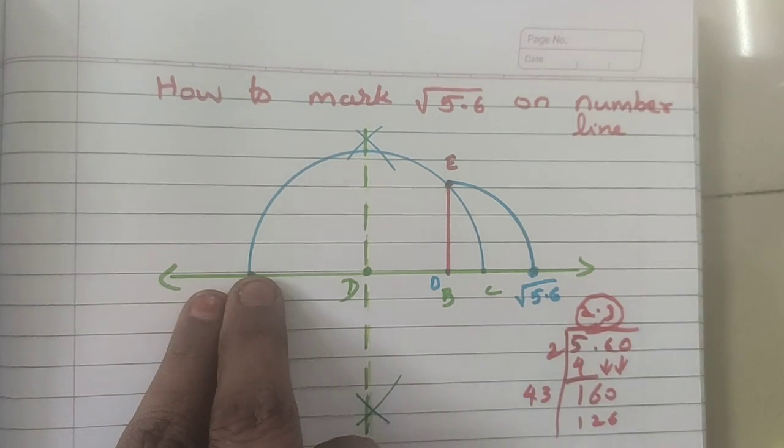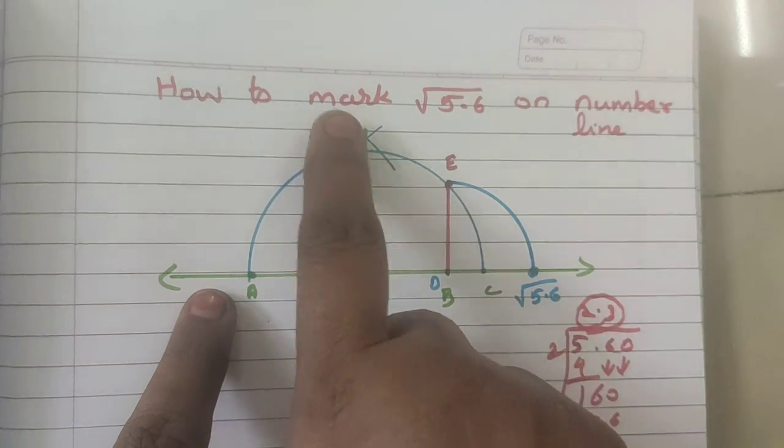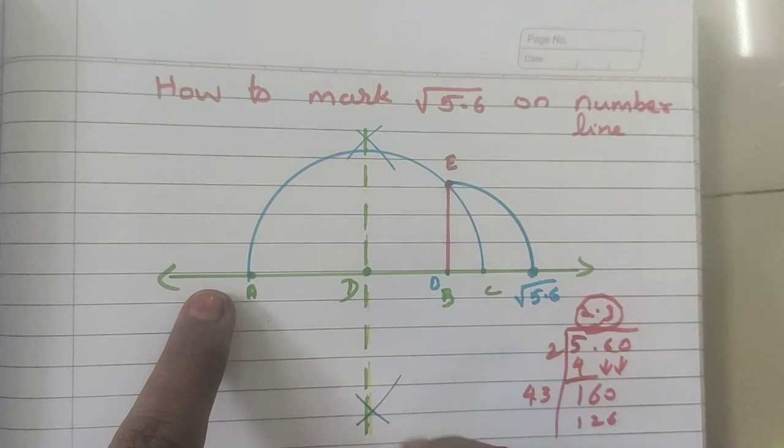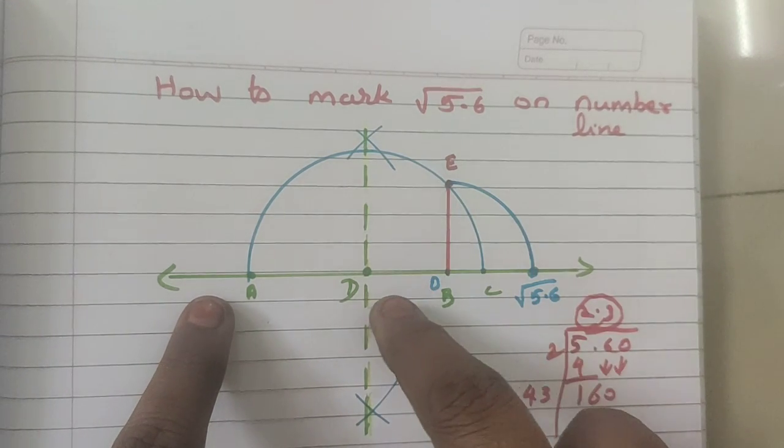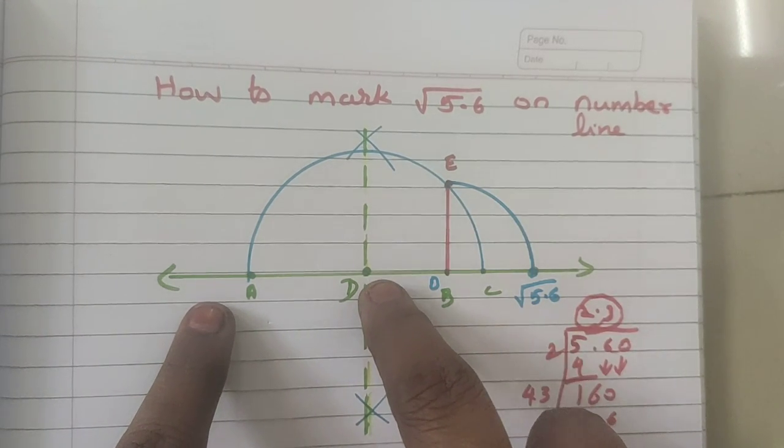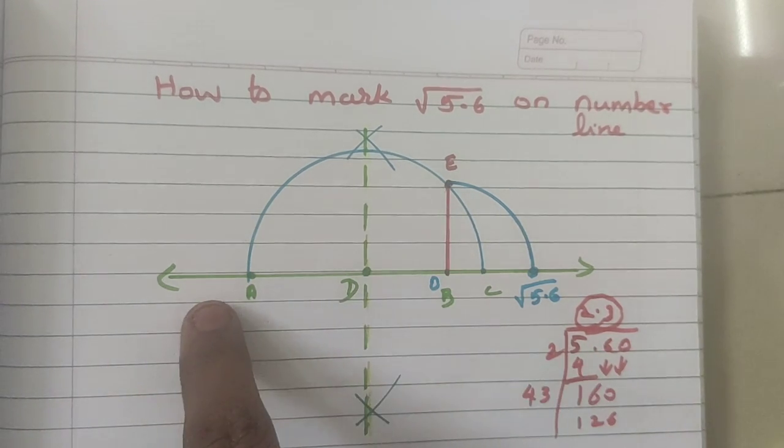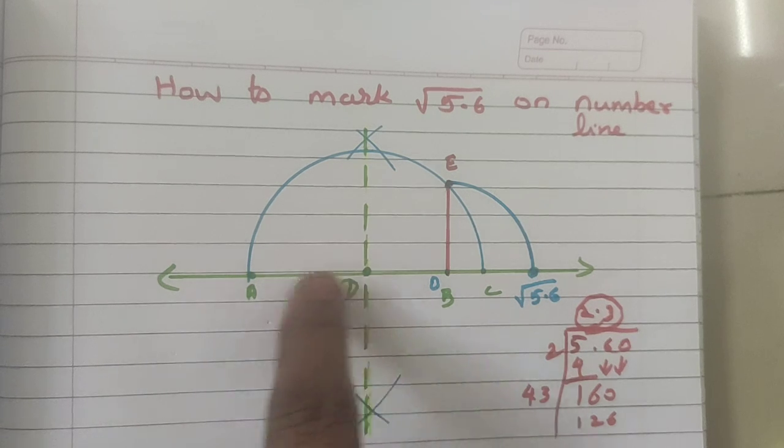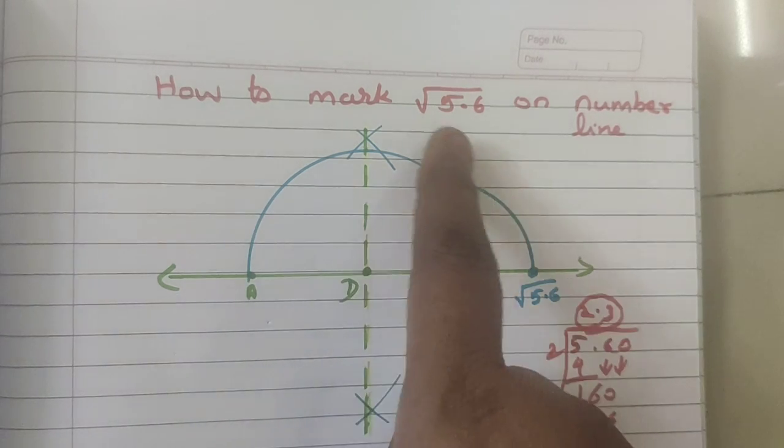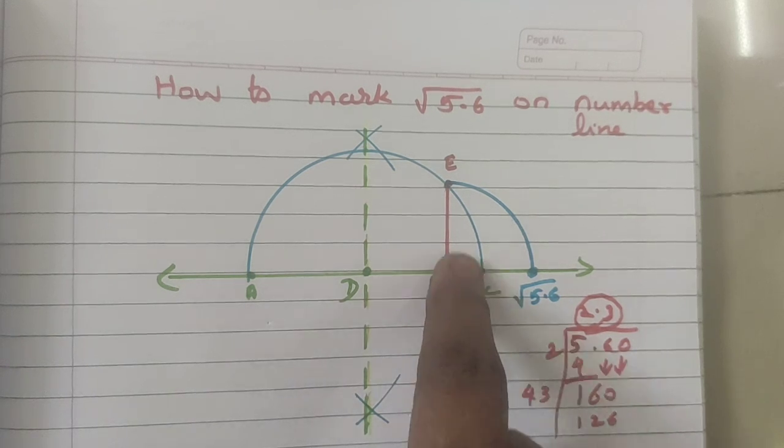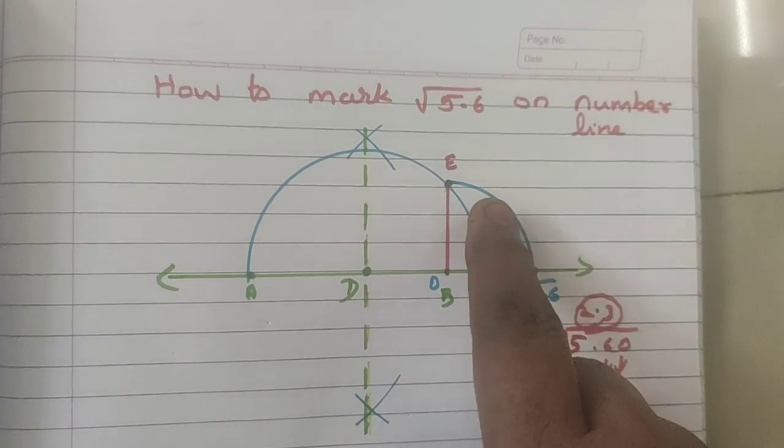How to bisect? From A, take more than half, mark arc on both the sides. Then, from C, cut the arc. Draw the line so that you will get the center point. Now, D is the center point. Keep your compass needle at D and radius A. D A is the radius. So, draw a semicircle. Now, from B, draw a perpendicular line. That is E.